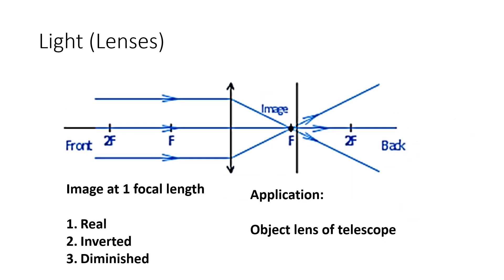We are at the lens diagrams now. There are six diagrams and you need to memorize all six. Basically the question will give you one line and you need to draw the full diagram, then state the three properties of the image and one use — usually that's about three to four marks.